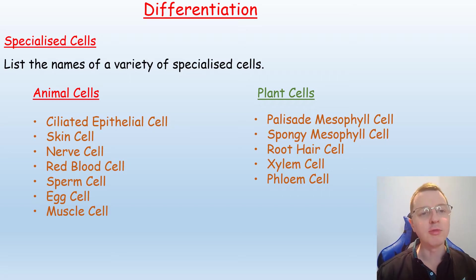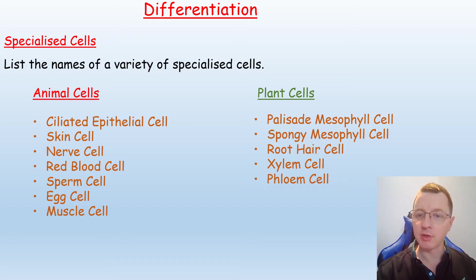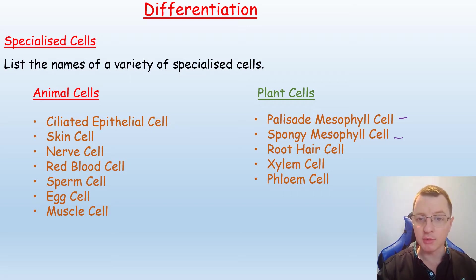On the screen in front of you is a list of various specialised cells found in both plants and animals. We have, for example, the palisade mesophyll and the spongy mesophyll, both found in plant leaves, which carry out photosynthesis.